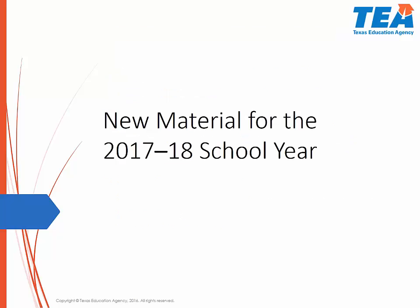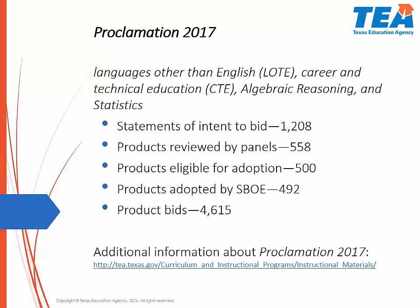New material for the 2017-18 school year — Proclamation 2017. Proclamation 2017 included languages other than English, Career and Technical Education, Algebraic Reasoning, and Statistics. TEA received 1,208 statements of intent to bid. 558 products were reviewed in the summer of 2016. The review panels found 500 products eligible for adoption and the State Board of Education ultimately adopted 492 of those products. Additional information may be found on our website.